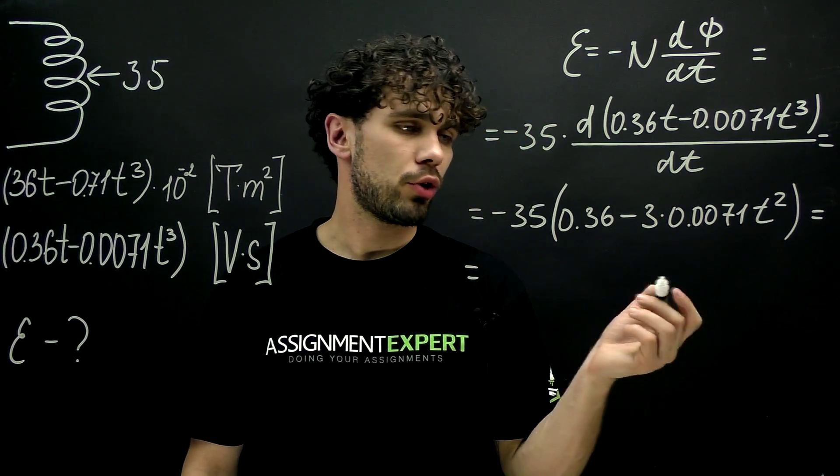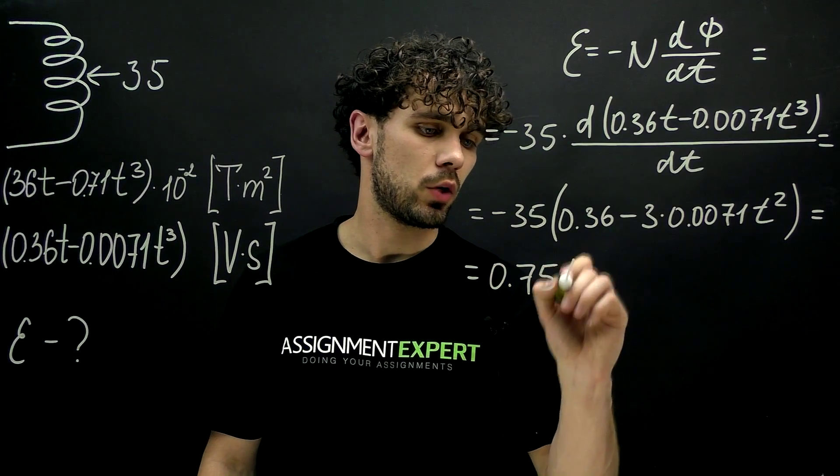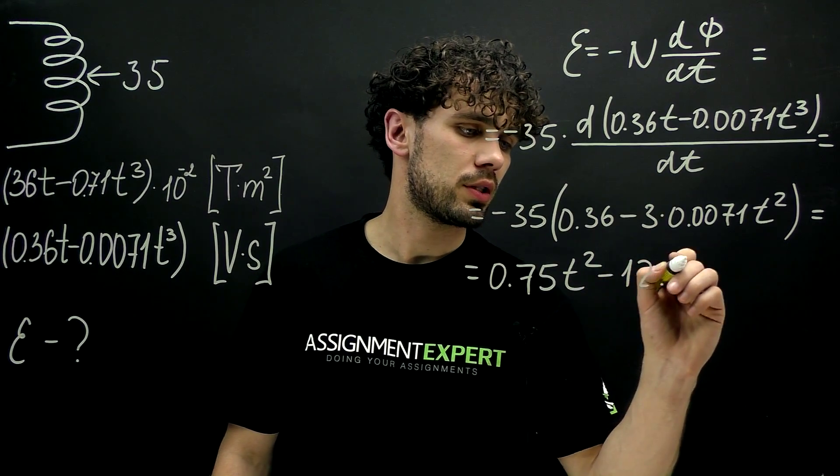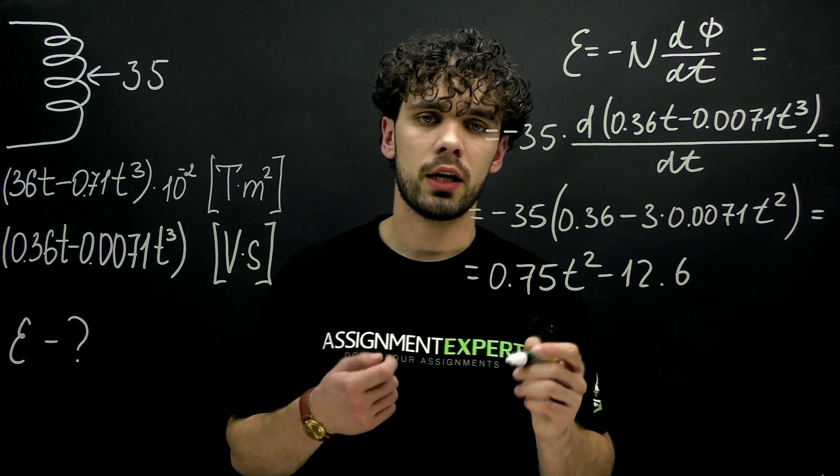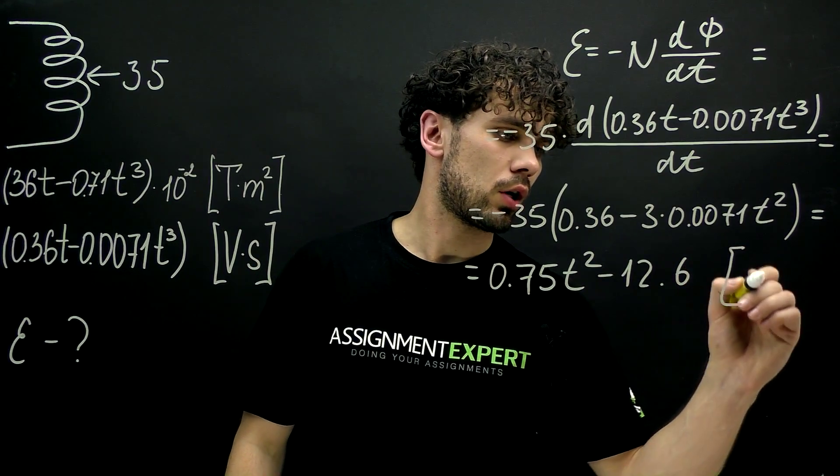Now opening the braces we get 0.75 t squared minus 12.6, and the units were volt times seconds and derivative of this unit will be just volts. So here the units are volts.